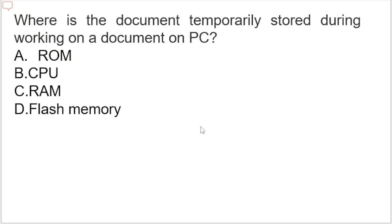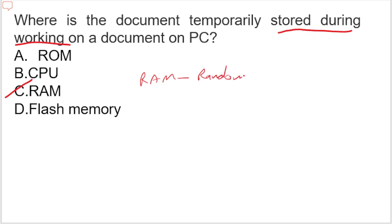Next question: where is a document temporarily stored while working on a document on a PC? Options are ROM, CPU, RAM, flash memory. Since it says 'during working,' the answer is RAM. RAM stands for Random Access Memory.